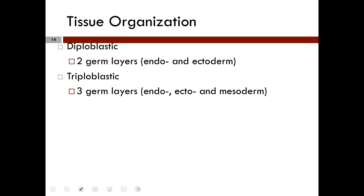Now to tissue organization. With tissue organization, I get to those germ layers, which deals with embryological development. As animals develop as embryos, they will have either two or three germ layers, and those germ layers give rise to differing tissues. Diploblastic animals have only an endoderm and an ectoderm. The endoderm forms the lining of the digestive tube and other digestive structures. The ectoderm gives rise to tissues that form the outer covering of the body as well as nervous tissue.